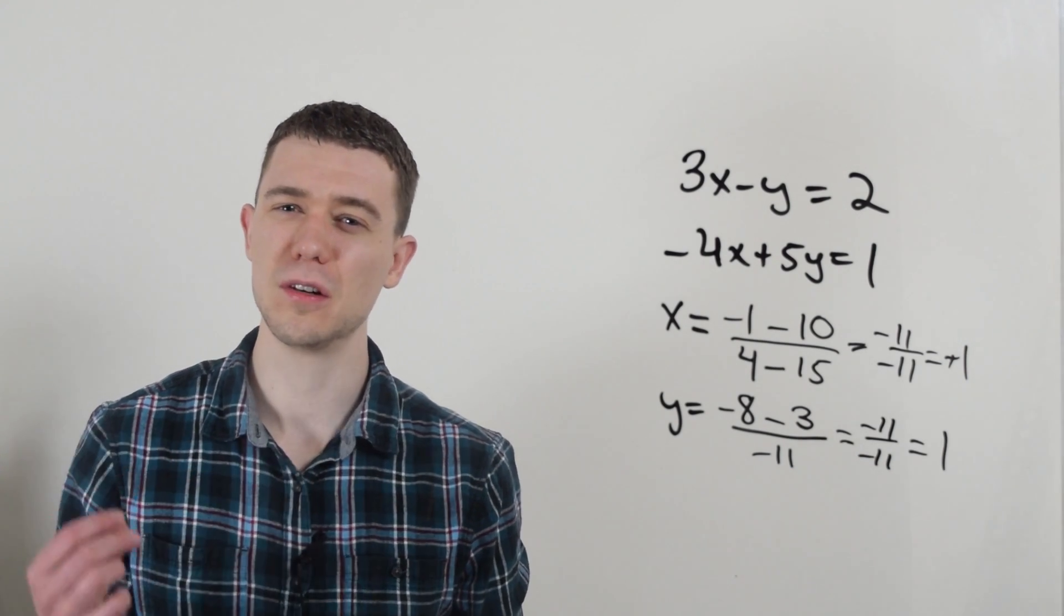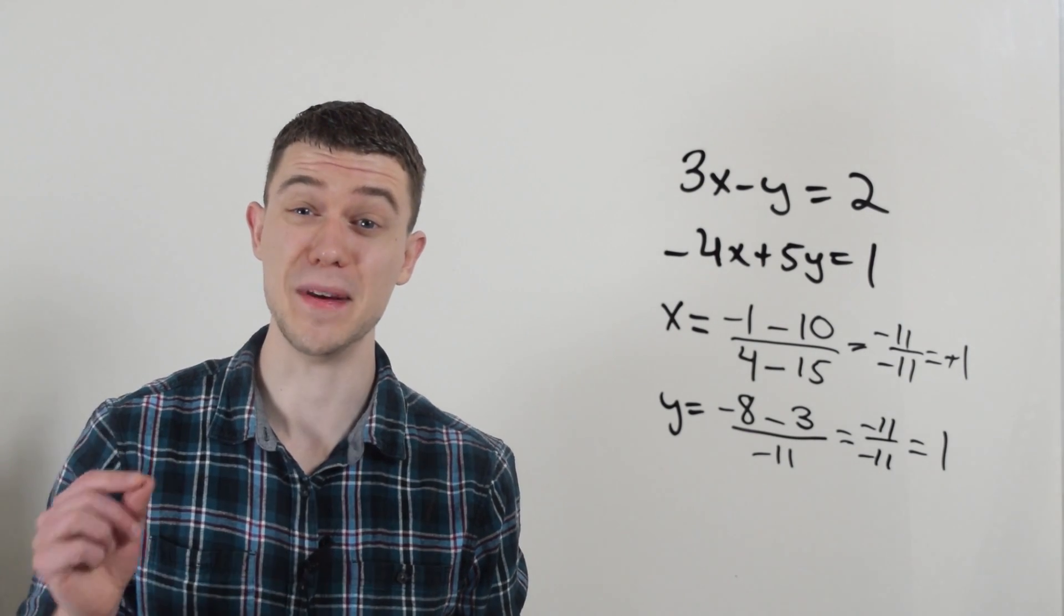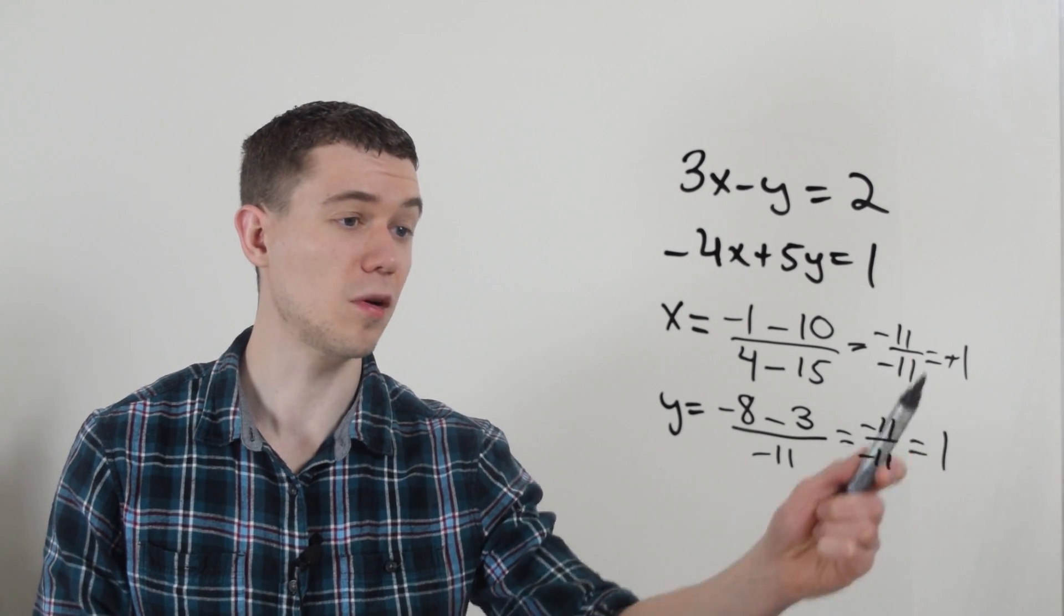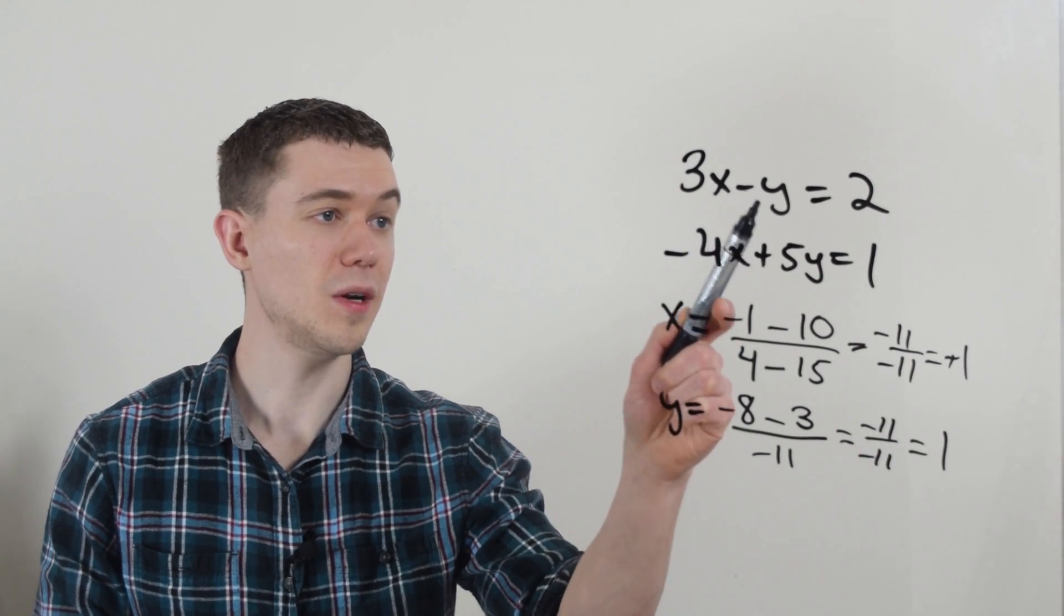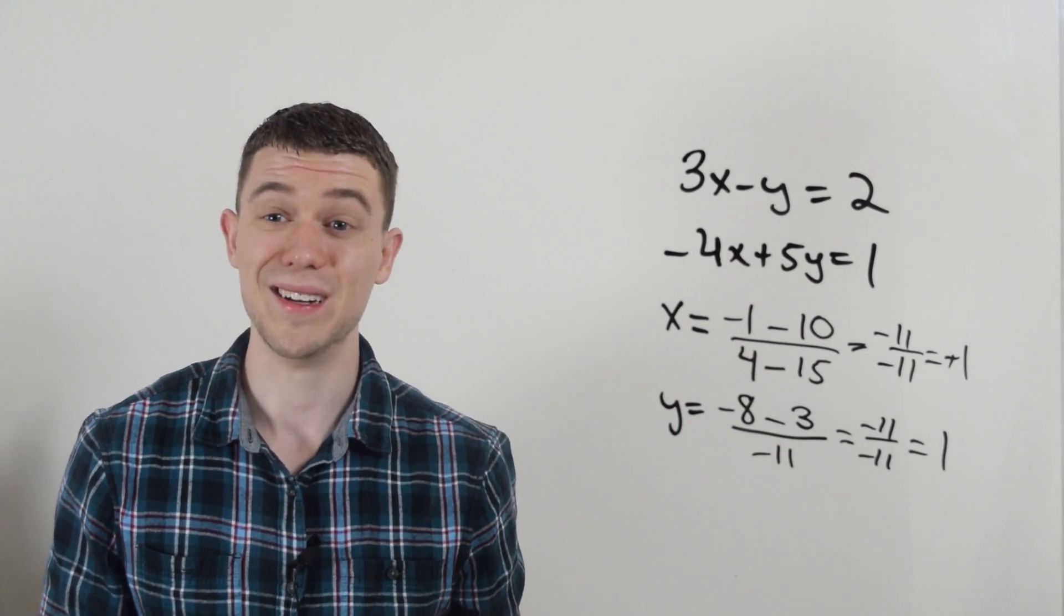And if you're ever not sure, if you ever feel like you made a mistake, you could always plug these numbers back into the equations and make sure that it makes sense. If I plug 1 in for x and y, 3 minus 1 is 2, and minus 4 plus 5 is 1. It works out.